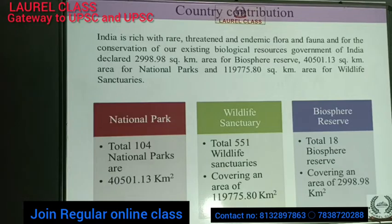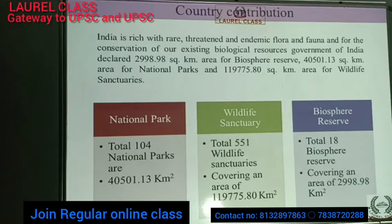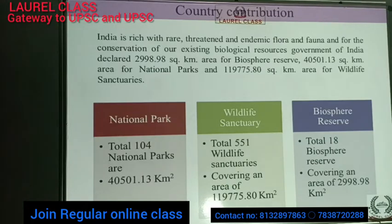India is rich with rare, threatened, and endemic flora and fauna species. The Government of India has declared 2,998.9 square kilometers for biosphere reserves, 40,501.13 square kilometers for national parks, and 1,19,775.80 square kilometers for wildlife sanctuaries. In total, India has 104 national parks, 501 wildlife sanctuaries, and 18 biosphere reserves.